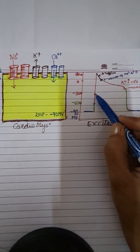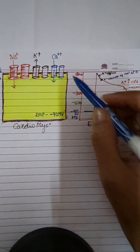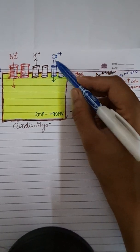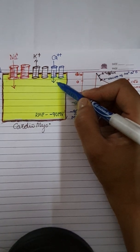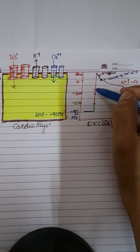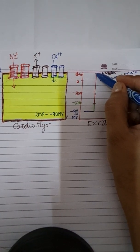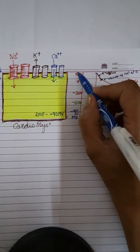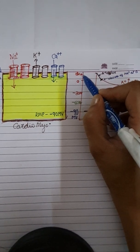At the minus 30 millivolt level, calcium channels open up and there is entry of calcium ions. This depolarizes the cell and the potential reaches up to positive 30 millivolts. At the level of positive 30 millivolts, depolarization-sensitive potassium channels open up.